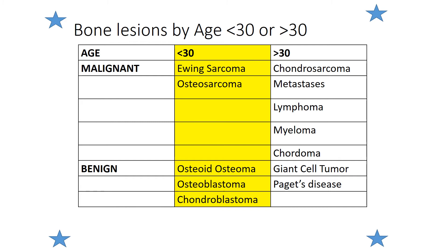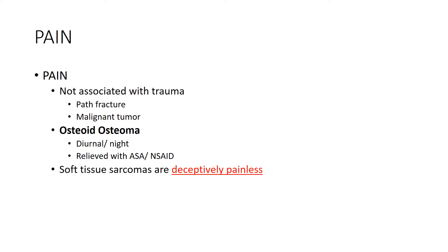When looking at bone lesions, it's most helpful to remember them by age — patients less than 30 or greater than 30. Patients less than 30 may be affected by Ewing sarcoma, osteosarcoma, osteoblastoma, or chondroblastoma, whereas older patients — greater than 30, certainly greater than 50 — are affected by chondrosarcomas, metastases, lymphomas, myelomas, chordomas, giant cell tumor, and Paget's disease of bone. Pain is important in presentation because pathologic fractures occur in abnormal bone, so patients with minimal trauma may have an associated benign or malignant tumor.